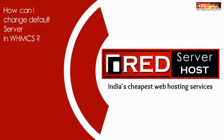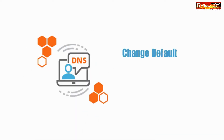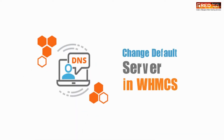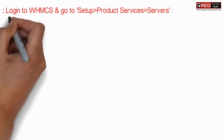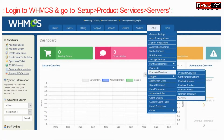Today in this video we will learn how to change the default server in WHMCS. For that, log in to WHMCS and then go to Setup, Product Services, and then Servers.